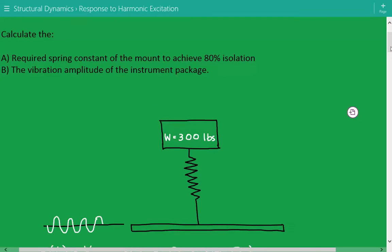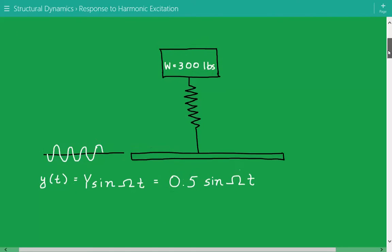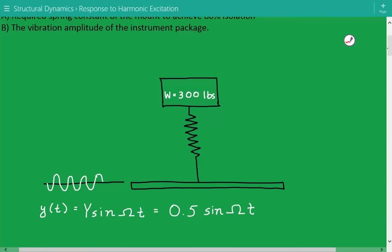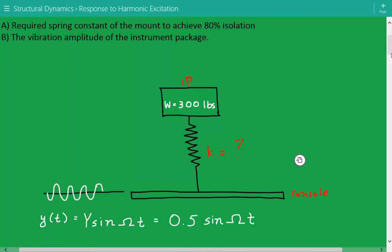So here's a representative model of what we have: we have some type of instrument package here, and it's connected to the console via a flexible mount, and the stiffness of this flexible mount is what we need to find to achieve 80% isolation.